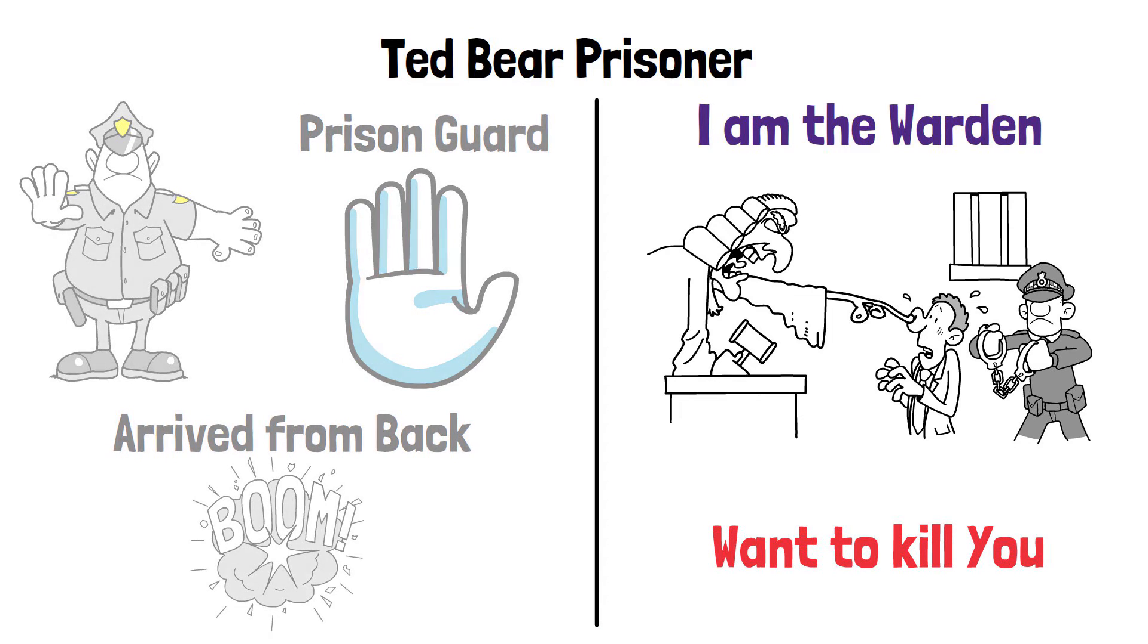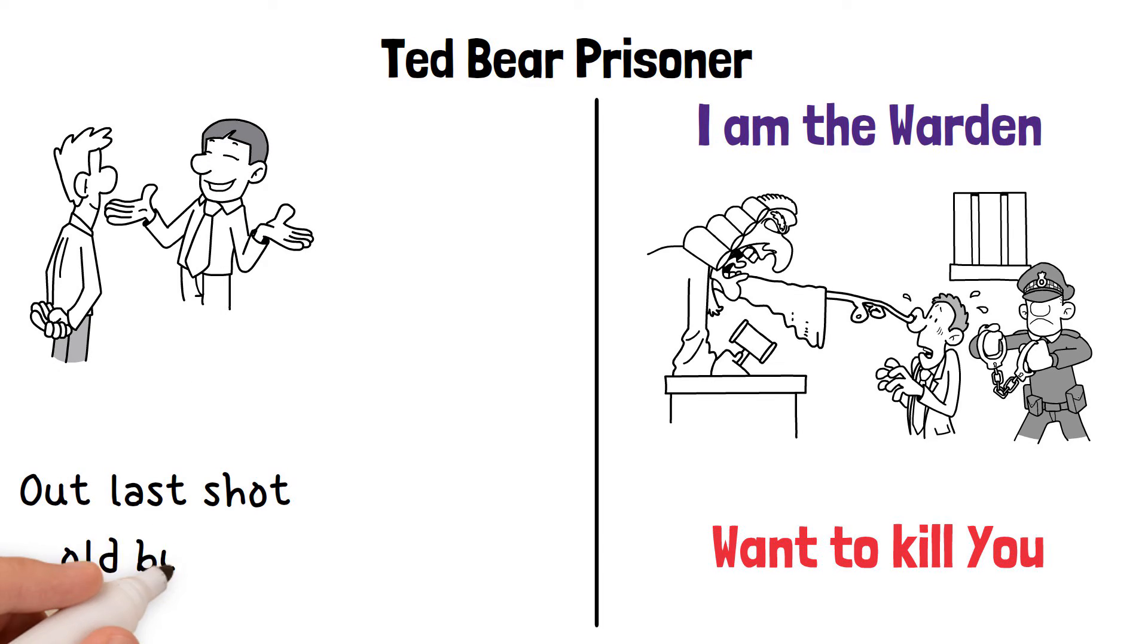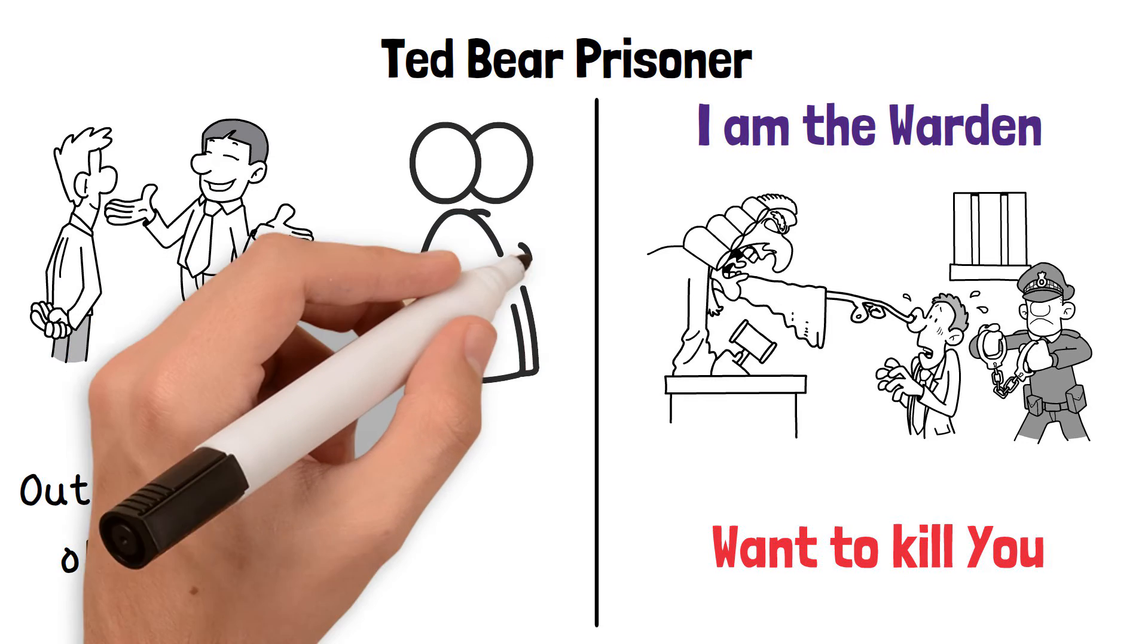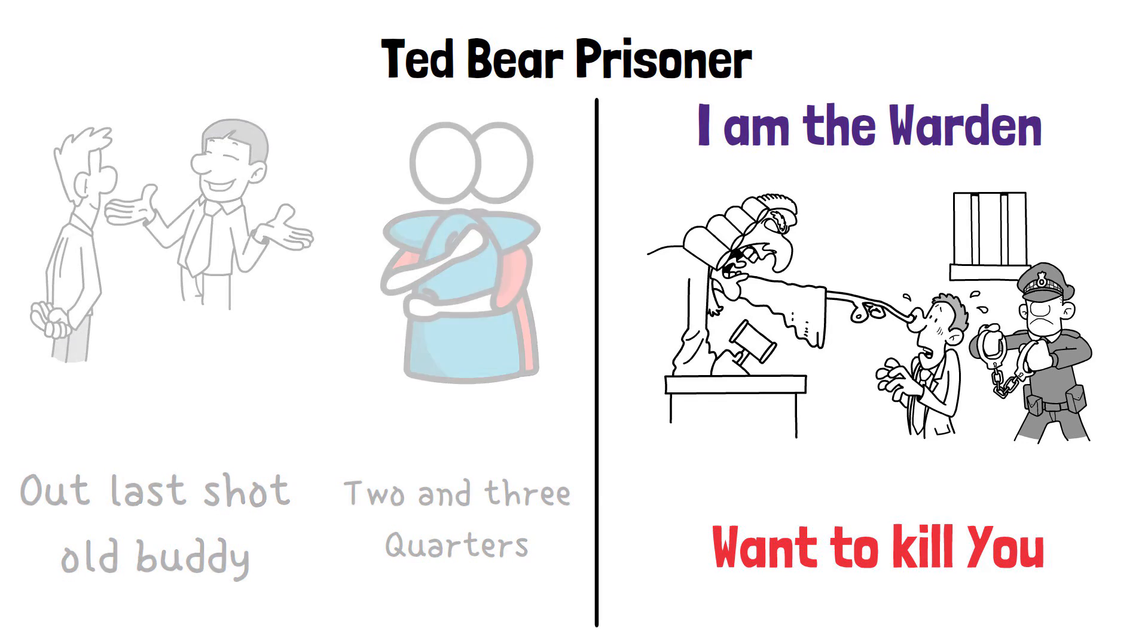Prisoners started talking with each other. P: Looks like we blew our last shot, old buddy. Warden: Two and a half. P2: I gotta come clean, you're the best prison friend I've ever had. Both prisoners hugged each other and started crying. Warden: Two and three quarters. Anonymous prisoner: Don't worry mates, death just means you finished surviving.